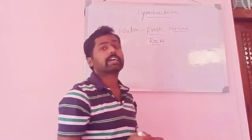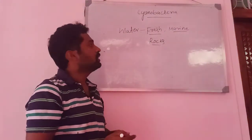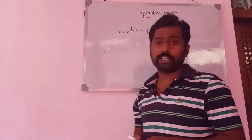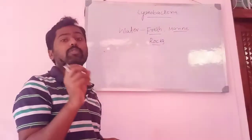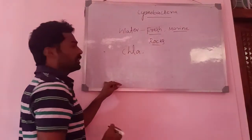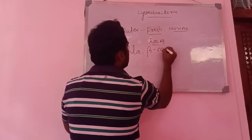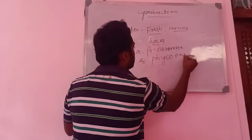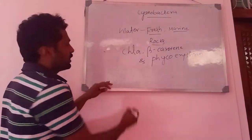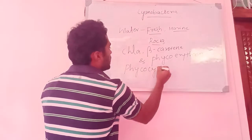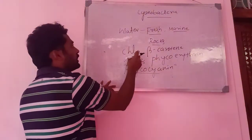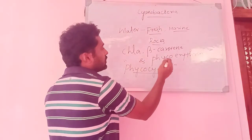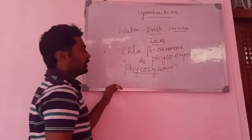These organisms are photosynthetic in nature — unlike bacteria where not all are photosynthetic, all members of Cyanophyta are photosynthetic. They have a characteristic blue-colored pigment Phycocyanin, along with other pigments like Chlorophyll-a, beta-carotene, and Phycoerythrin — which is a red-colored pigment.